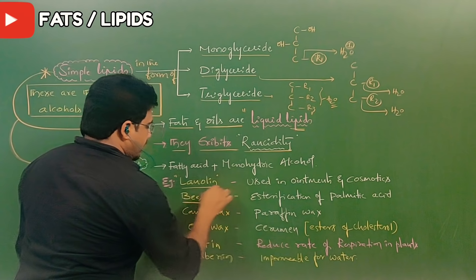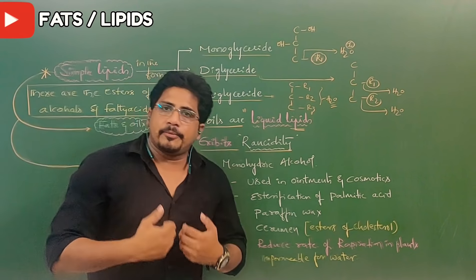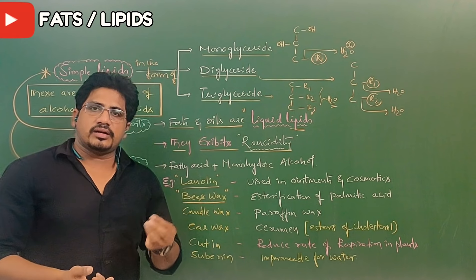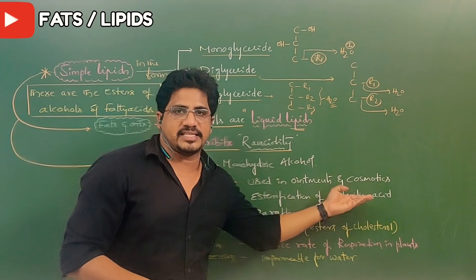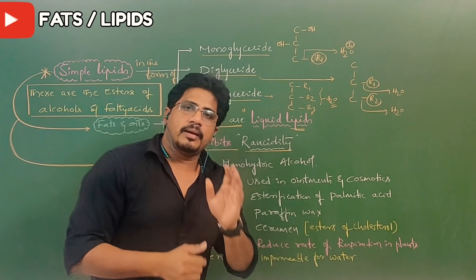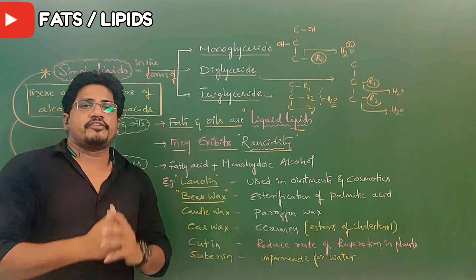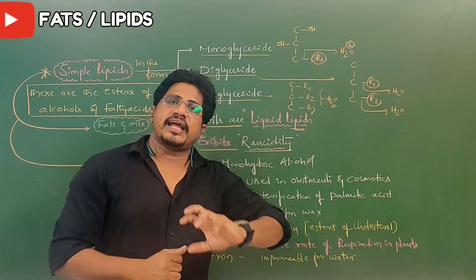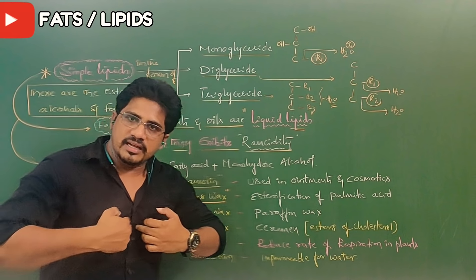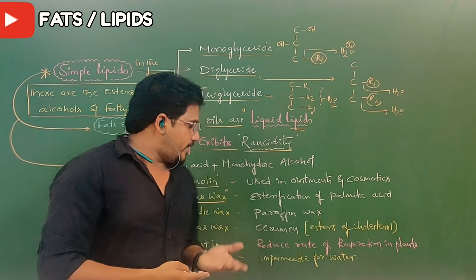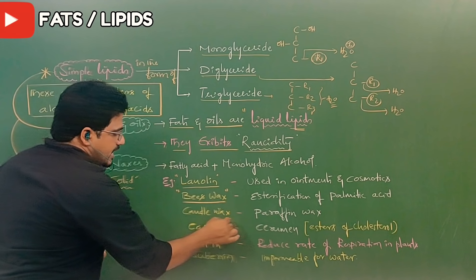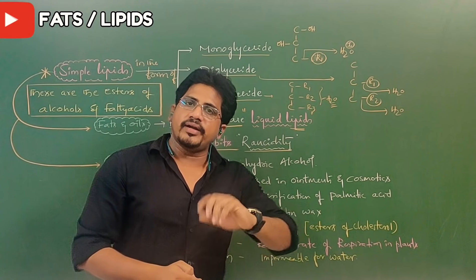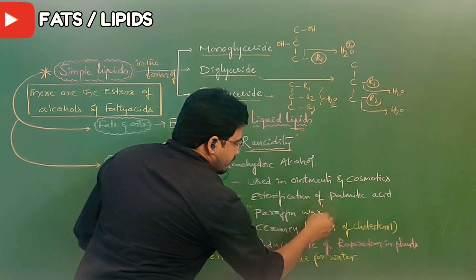Beeswax: honey bees secrete a chemical from their abdominal glands. This chemical is the esterification of palmitic acid. Palmitic acid is a saturated fatty acid — its structure and formula were given in the last session. The palmitic acid secreted by the bee's abdomen is solidified into beeswax.